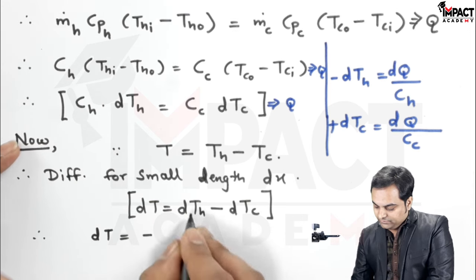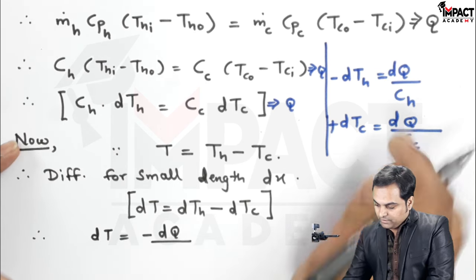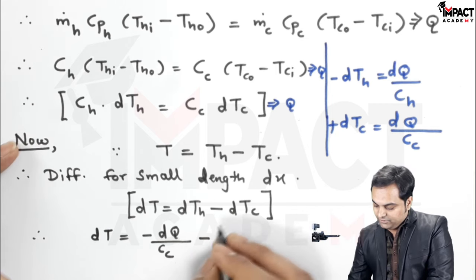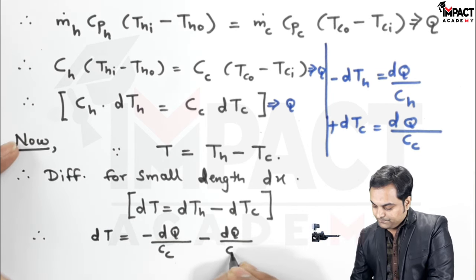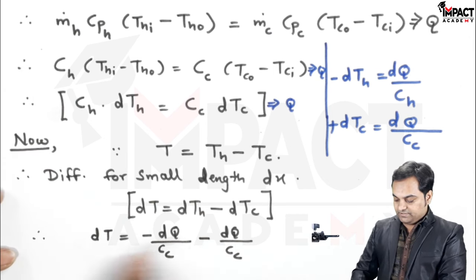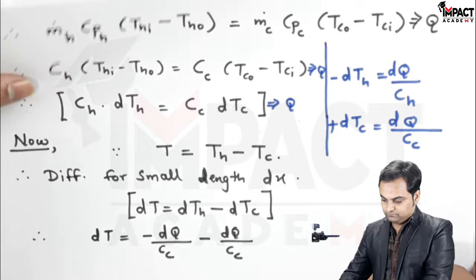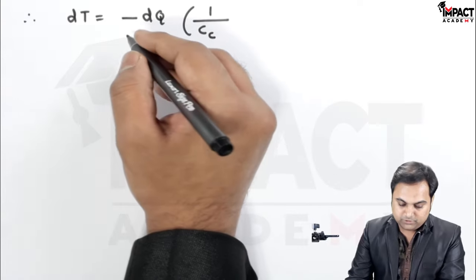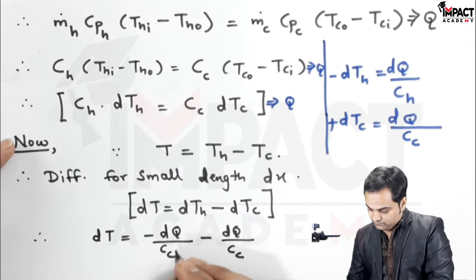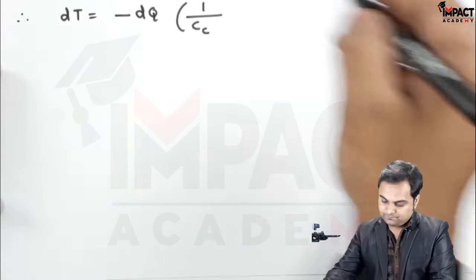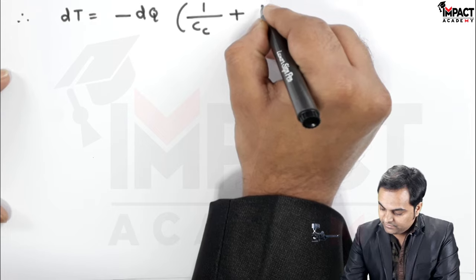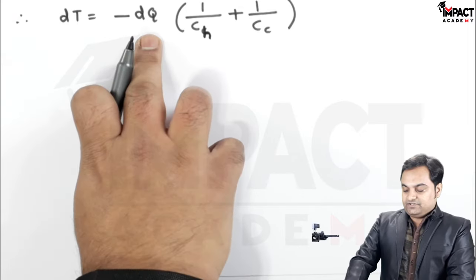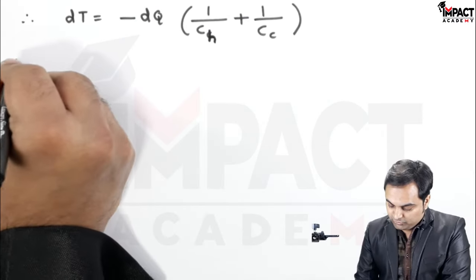Writing DTH as minus DQ upon CH and DTC as DQ upon CC, and substituting into dT equals DTH minus DTC, then taking minus DQ as common: dT equals minus DQ into (1 upon CH plus 1 upon CC).